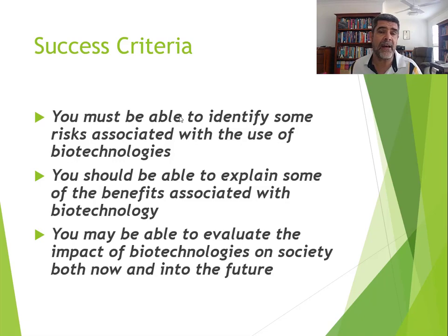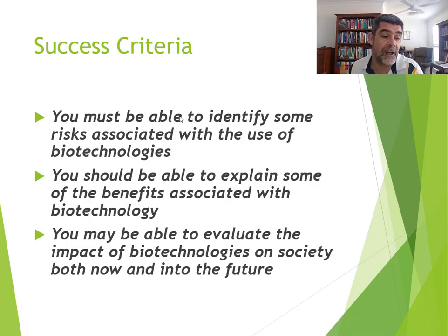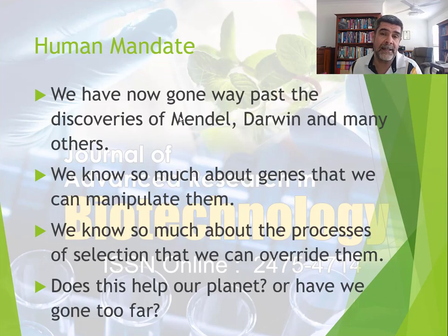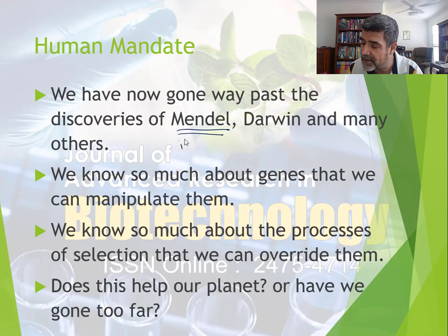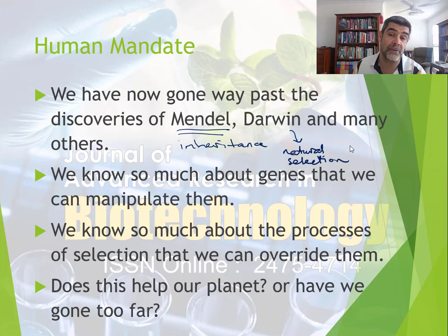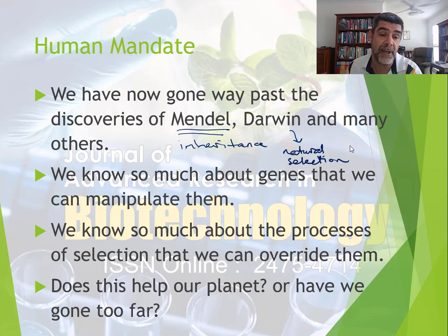What we're looking at here in particular is how the changes that we're able to make now in a number of different species of both plants and animals and indeed humans, what effect that may have on biodiversity or species diversity now and into the future. What is the human mandate? We know that there is a lot of information shared from the times of Mendel when we first started to look at patterns of inheritance, through Darwin and our understanding of natural selection and some of the drivers. Darwin himself also focused on artificial selection and the fact that the processes he felt were happening in natural situations were also ones that humans could manipulate and cause change in populations.